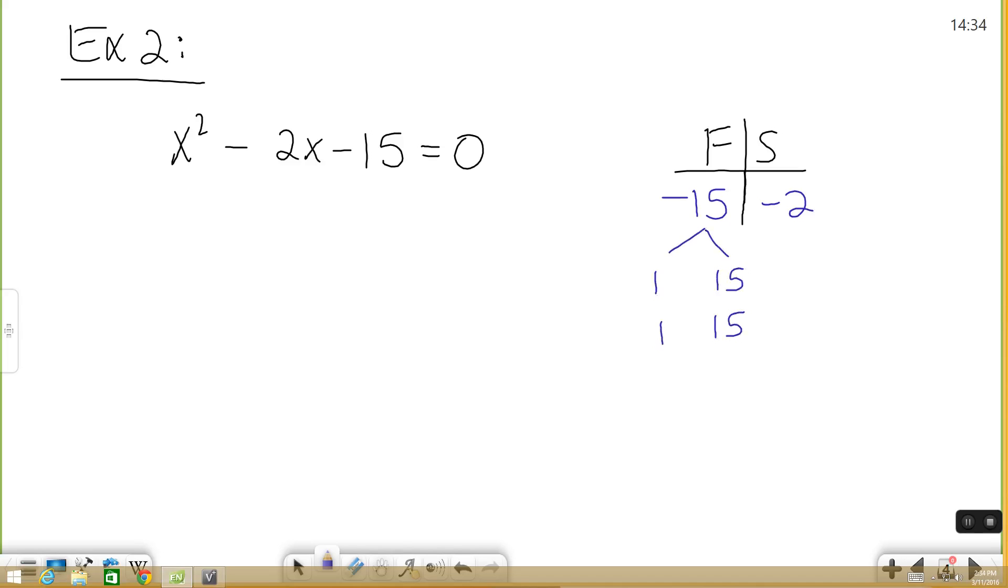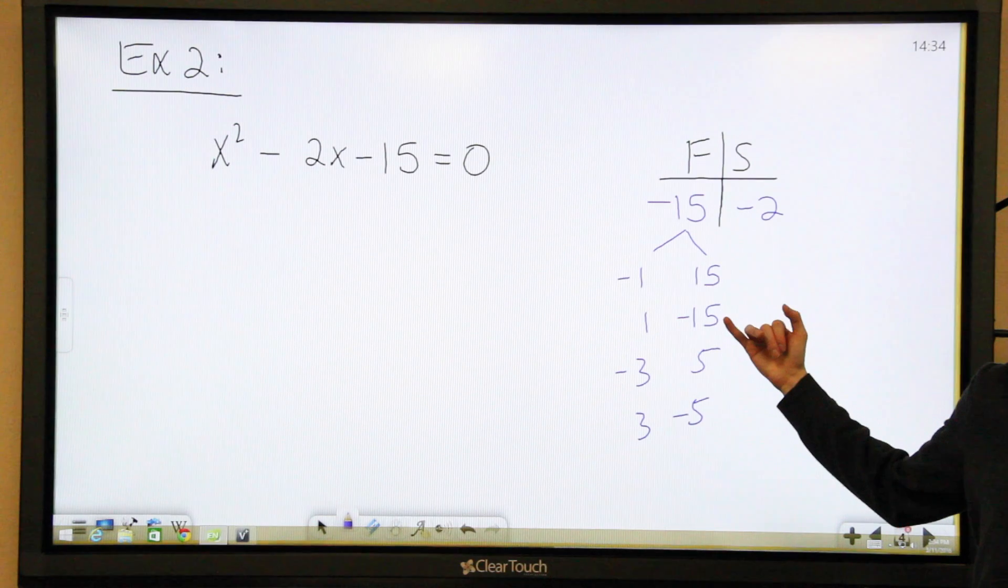So I'm writing them twice because since our factor number is negative, one of our factors has to be negative. So negative there, negative there. We also have 3 and 5. Negative there, negative there.